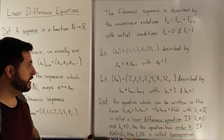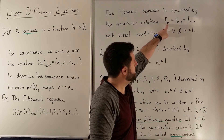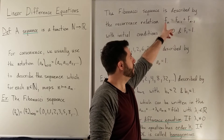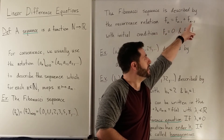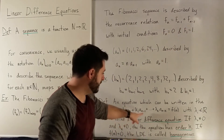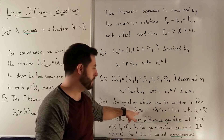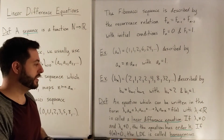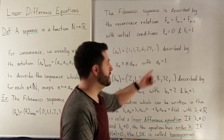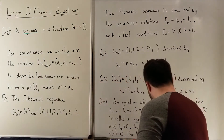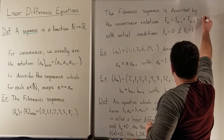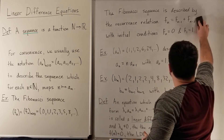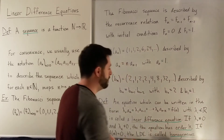An example of a linear difference equation is this one: f_sub_n equals f_sub_{n-1} plus f_sub_{n-2}. Notice that if we subtract these two terms to the left-hand side, we get f_sub_n minus f_sub_{n-1} minus f_sub_{n-2} equals 0. That is in this form where lambda_0 is 1, lambda_1 is negative 1, lambda_2 is also negative 1, and k equals 2. So it's a linear difference equation of order 2, and it is also homogeneous because there's no extra term. If we wanted to make it not homogeneous, we could have something like plus 3, or plus 3n, or some function of n which is not just 0.